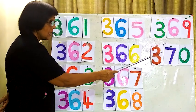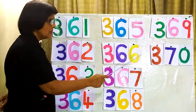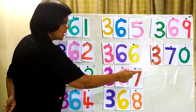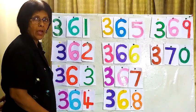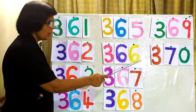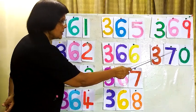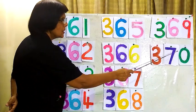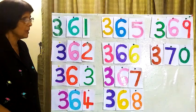We will go to the last number here: 369, 370. From the beginning we will read once again.